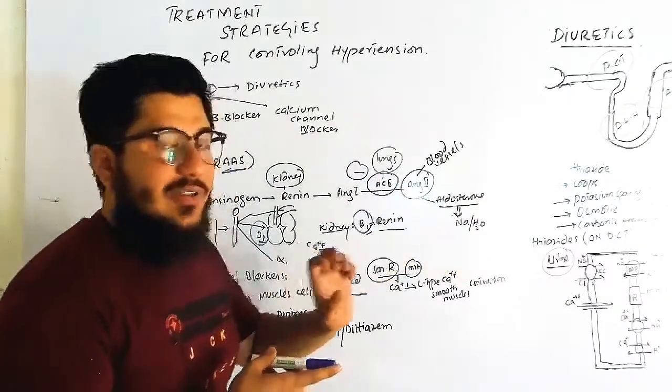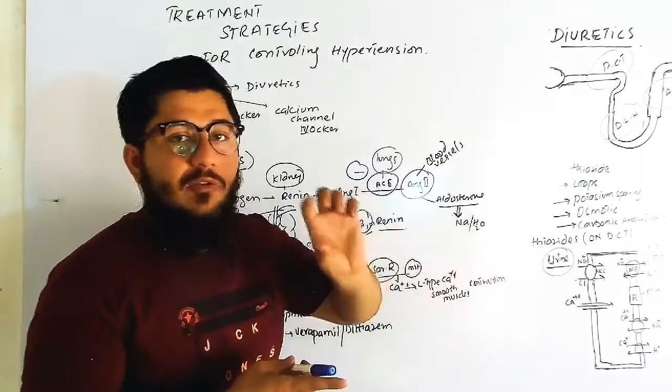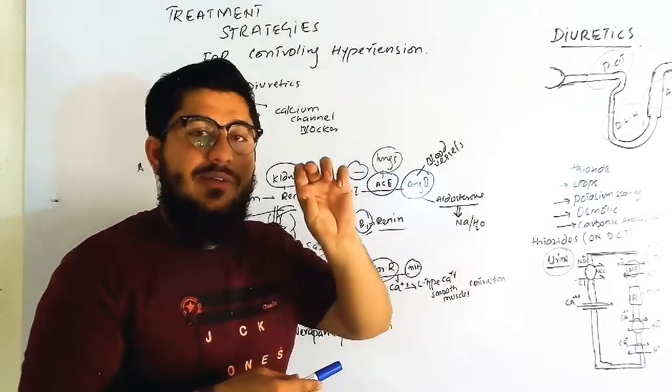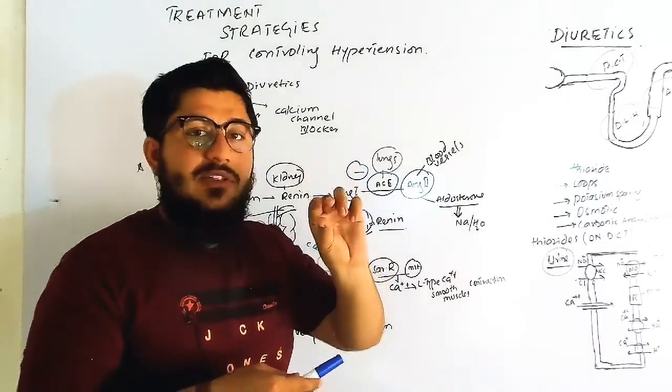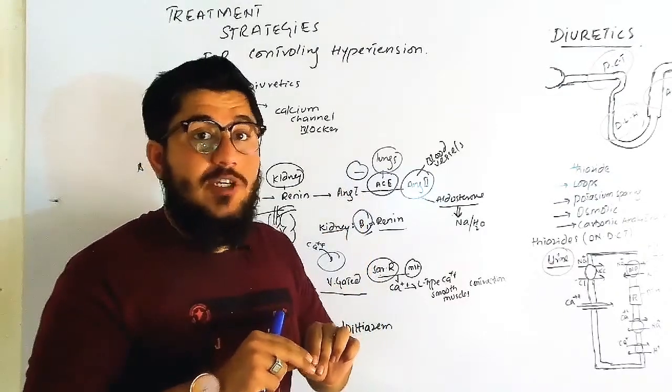Aldosterone stimulates reabsorption of sodium and water, which will increase blood volume. Blood vessel constriction will decrease the diameter of blood vessels. Now, how will we reduce it?